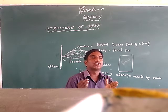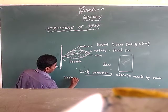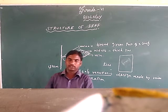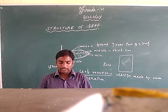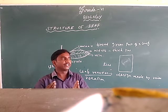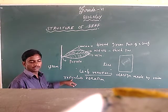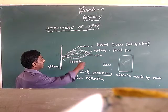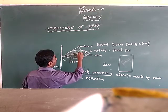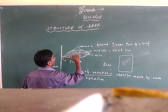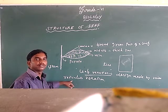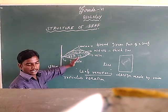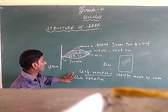The next type is reticulate venation. Reticulate venation means the design inside the lamina looks like a net-like structure on both sides of the midrib. If you see a net-like structure inside the lamina, that is called reticulate venation.